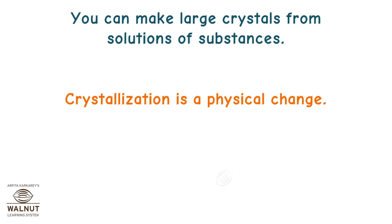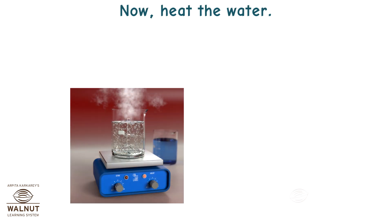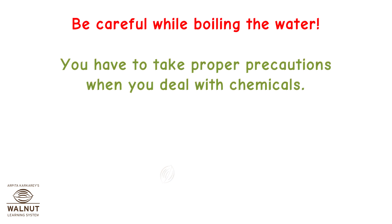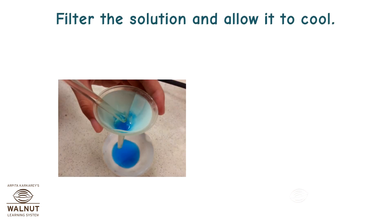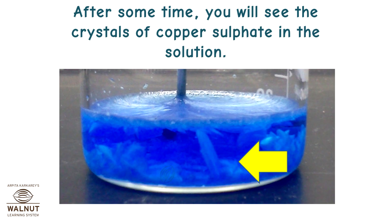Crystallization is a physical change. Let's do an experiment. Take water in a beaker and add a few drops of dilute sulphuric acid to it. Now heat the water. When it starts boiling, add copper sulphate powder and stir. Be careful while boiling the water — take proper precautions when you deal with chemicals. Add more copper sulphate powder till no more powder can be dissolved. Filter the solution and allow it to cool. Do not disturb the solution when it's cooling. After some time, you will see the crystals of copper sulphate in the solution.